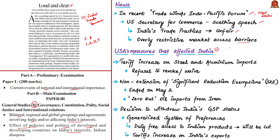The first sub-set covers the measures of USA that have affected Indian trade. In March 2018, USA increased the tariffs on imports of steel and aluminium. India was affected by this decision of USA, and USA has continuously refused to revoke or waive the tariff hike which was proposed by India.